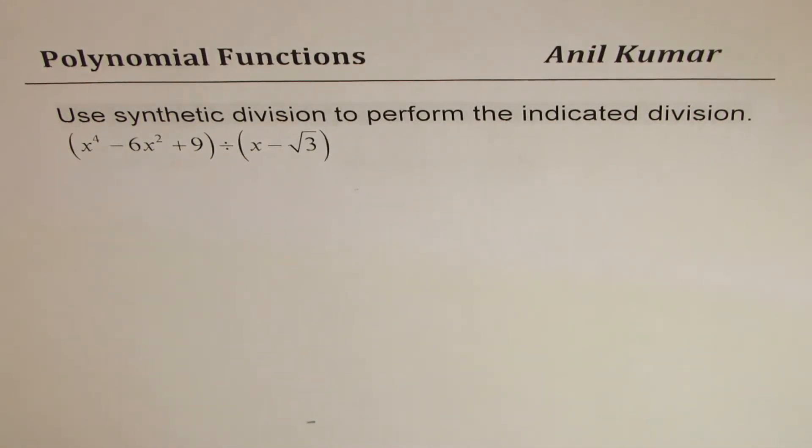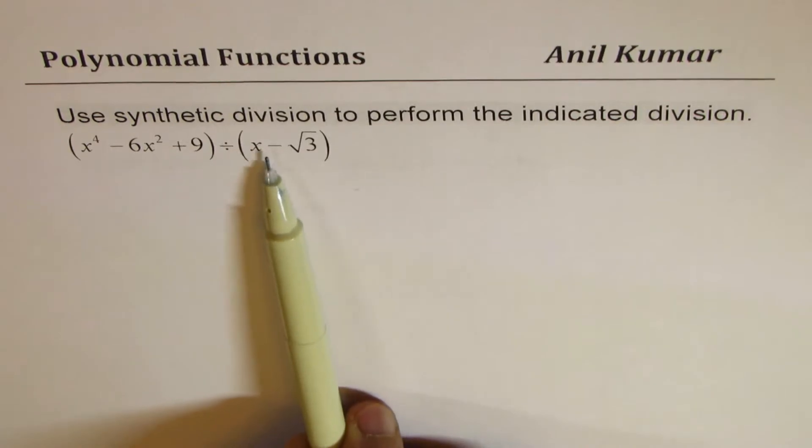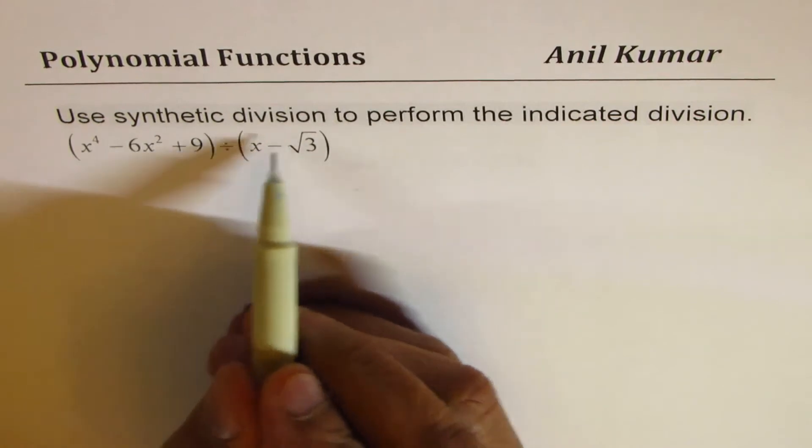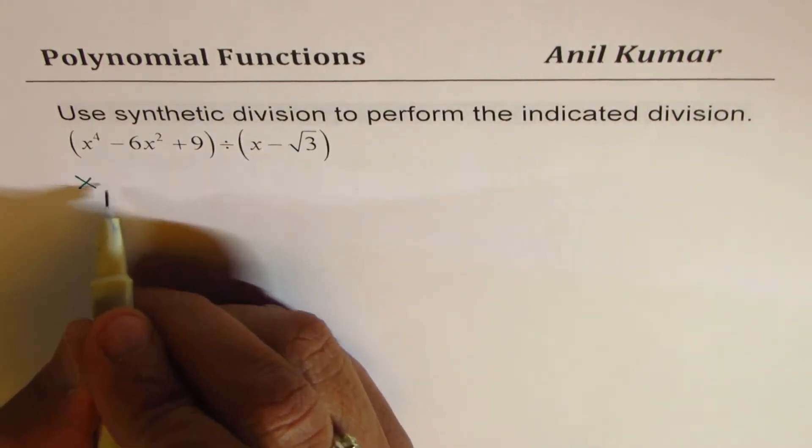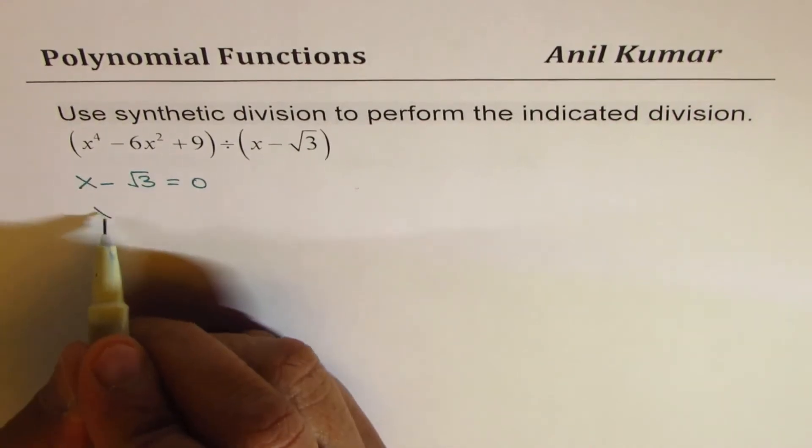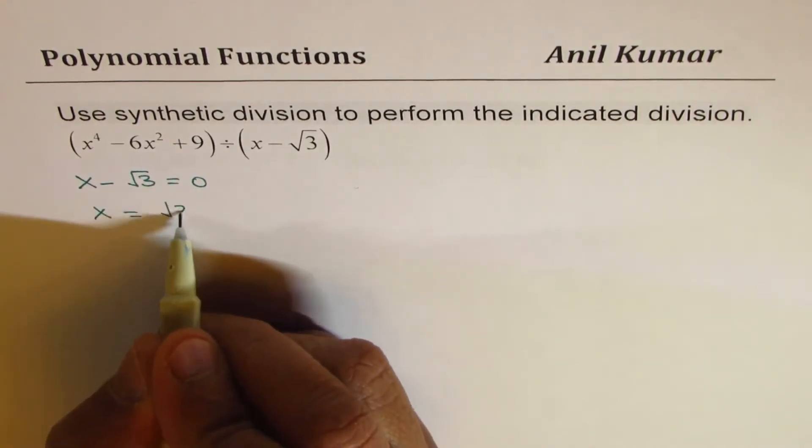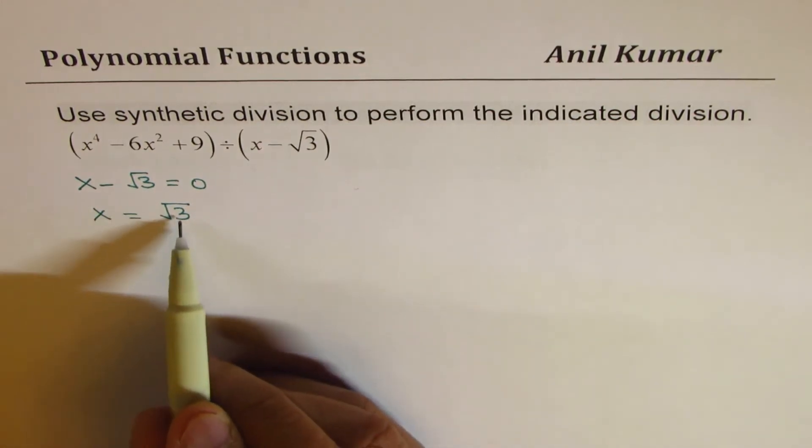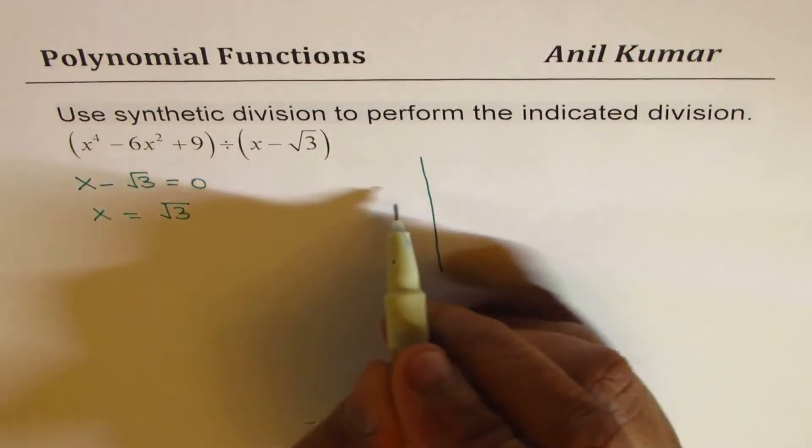Now when you divide by a term like x minus square root 3, we have to find the value for which the divisor is 0. So we have x minus square root of 3. It is 0 for x equals to square root of 3. So in synthetic division, we will divide by square root of 3. Let us see how to divide it now.